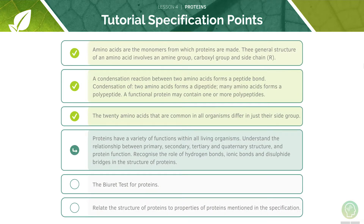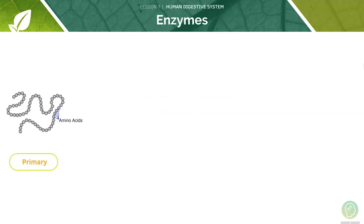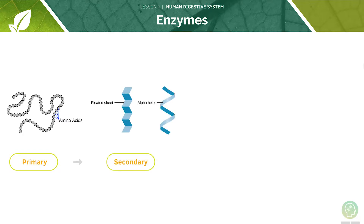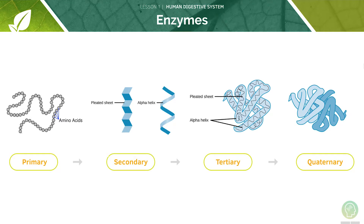Now we will cover the range of functions of proteins. There are four levels of protein structure: primary, secondary, tertiary, and quaternary. Their representations are shown here. We can go from primary, to secondary, to tertiary, and finally reach quaternary structure.